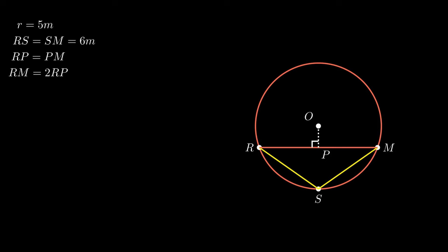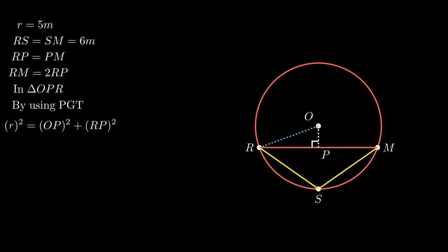Joining R to O results in the formation of right angle triangle OPR. Using the Pythagorean theorem — that the square of the hypotenuse equals the sum of the squares of the perpendicular and base — and substituting the corresponding values of hypotenuse, base, and perpendicular, we get: r² = OP² + RP².